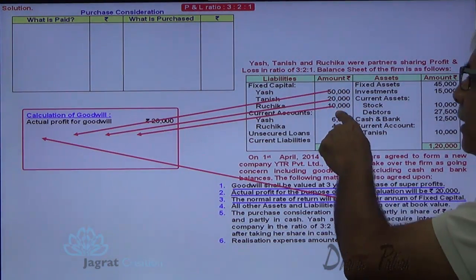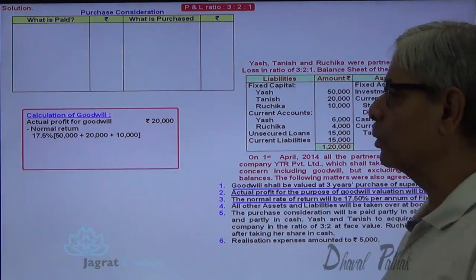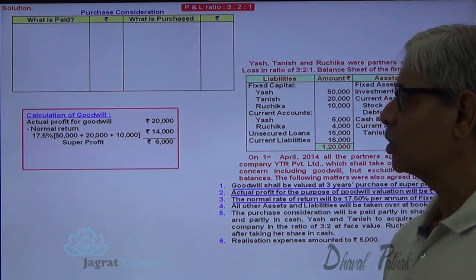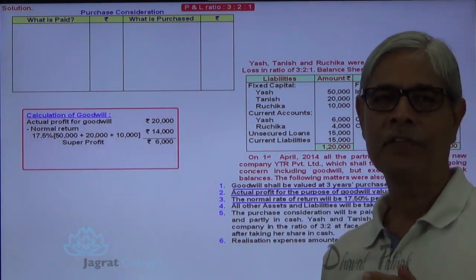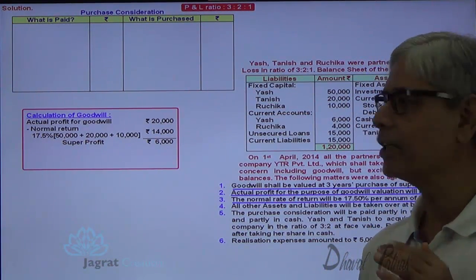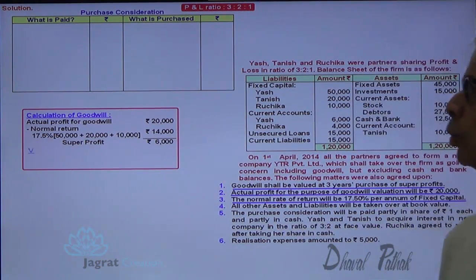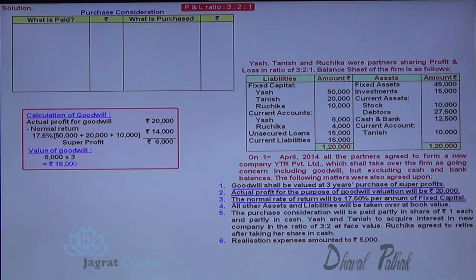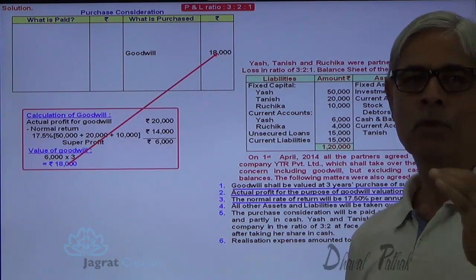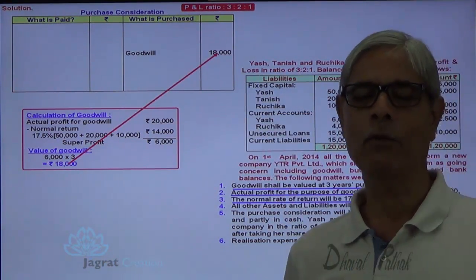Fixed capital: 50,000 plus 20,000 plus 10,000 equals 80,000, multiplied by 17.5%, which works out to 14,000. So the super profit — the profit which exceeds the normal rate of return — is 20,000 minus 14,000 equals 6,000. Super profit multiplied by 3 gives the value of goodwill, which is 18,000. So the agreed goodwill value for the partnership firm is 18,000.